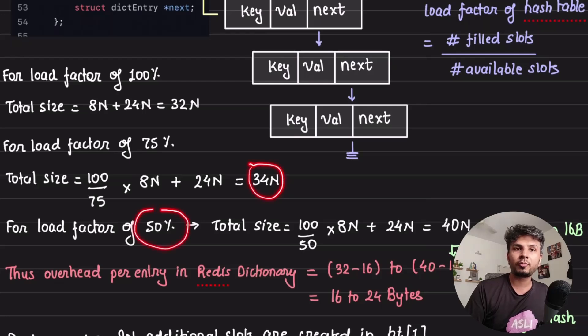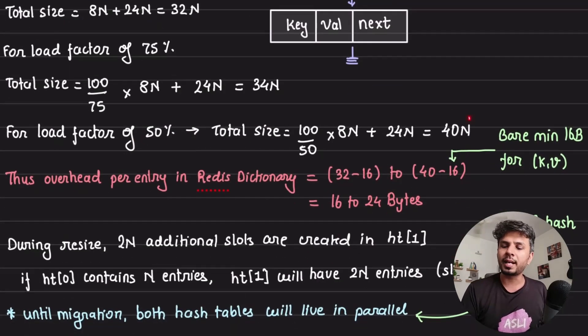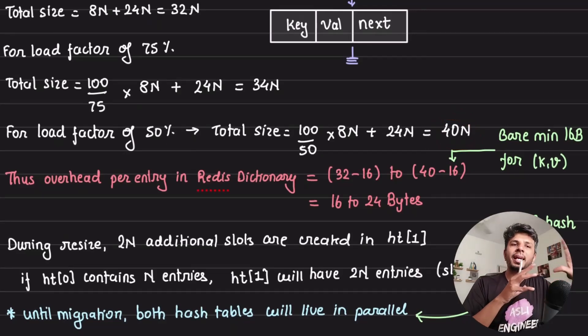For a load factor of 75, it would be 34n. For a load factor of 50, which means only 50% are filled, the overhead, my total size would be 40n.